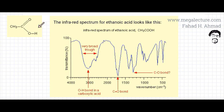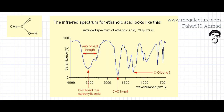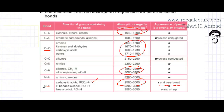Here is my infrared spectrum for ethanoic acid. Just as I said, a few bonds are uniquely identifiable: one is the strong absorption at the 1,600 to 1,700 wave number range — it's always going to be C=O. The other is this very broad absorption around the 2,500 to 3,000 range, because of the OH bond in carboxylic acid. These two bonds and their infrared peaks would be very uniquely identifiable.